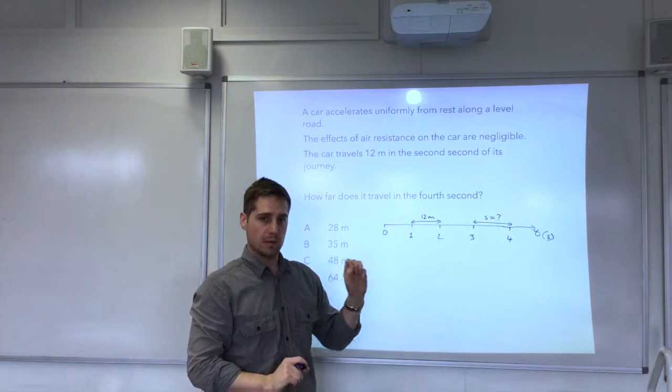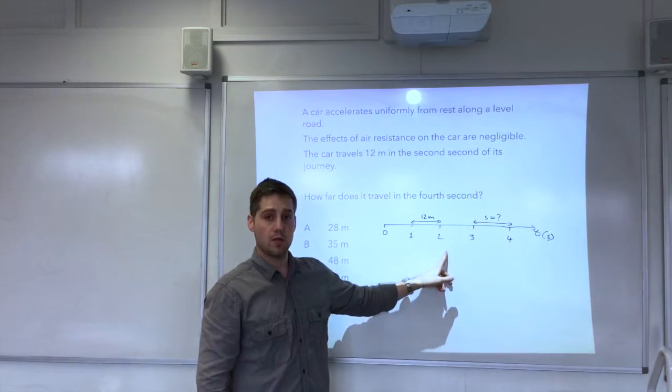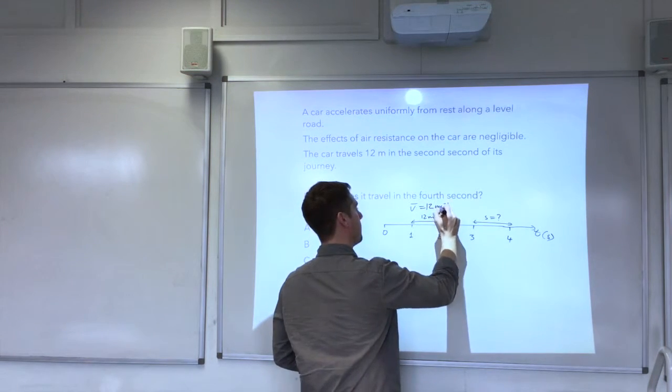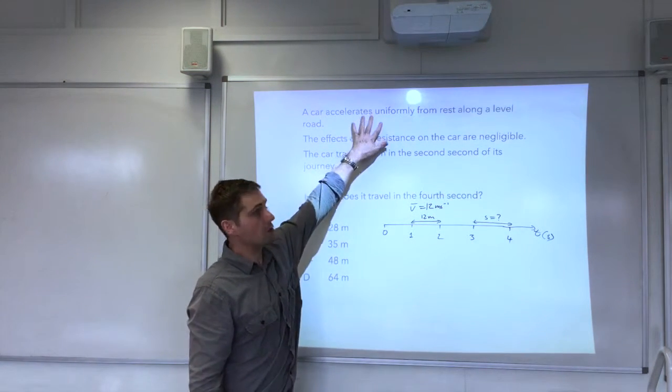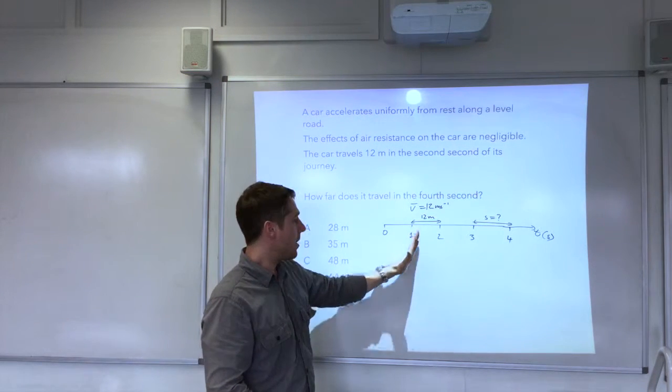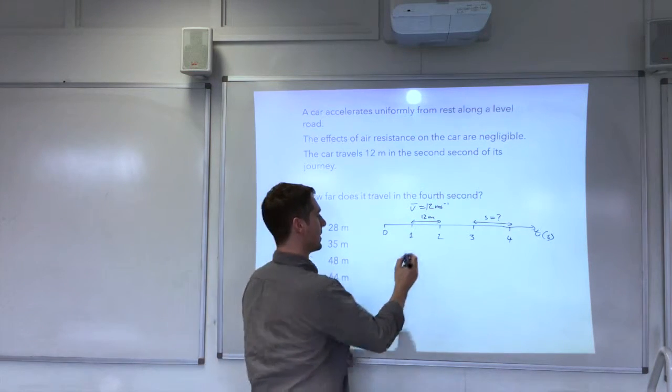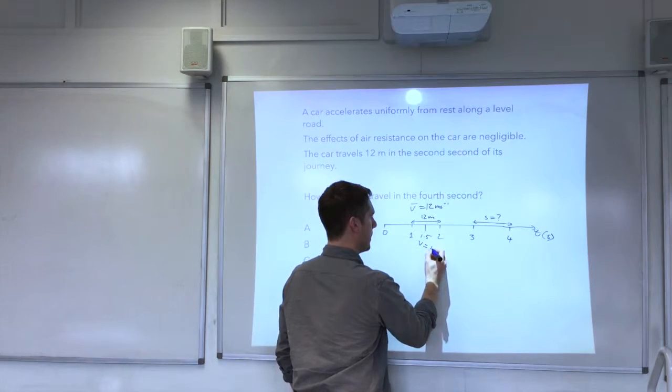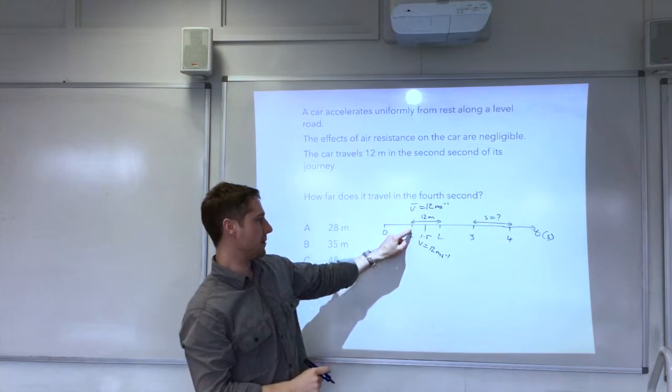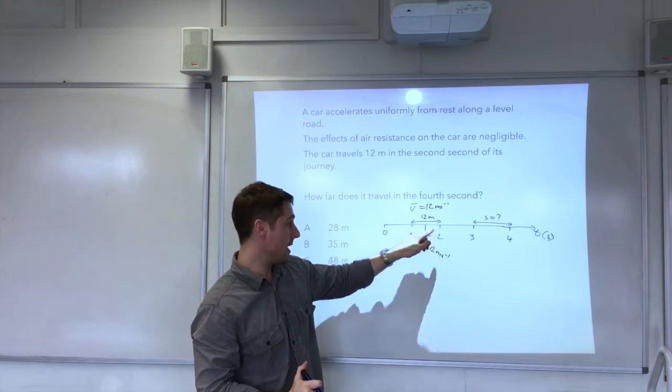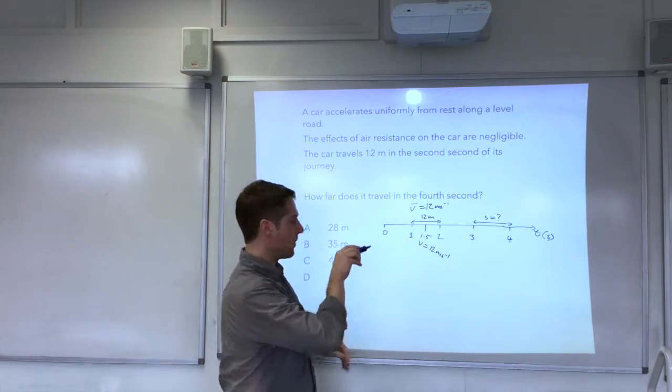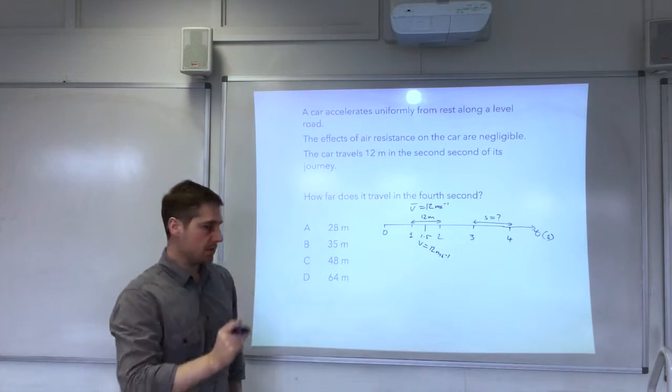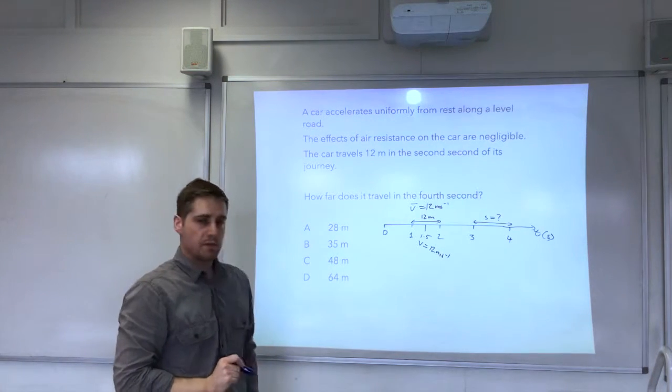Now if it's travelled 12 metres in one second that means that its average speed over this time is 12 metres per second. And because it's a uniform acceleration that means that halfway between it would actually have that velocity. So at 1.5 seconds the velocity will equal 12 metres per second. So it will actually be less than 12 metres per second there and larger than 12 metres per second there. But when it crosses the halfway point because you've got a straight line it would be at 12 metres per second at 1.5, halfway between. So we can use that to find that information out.